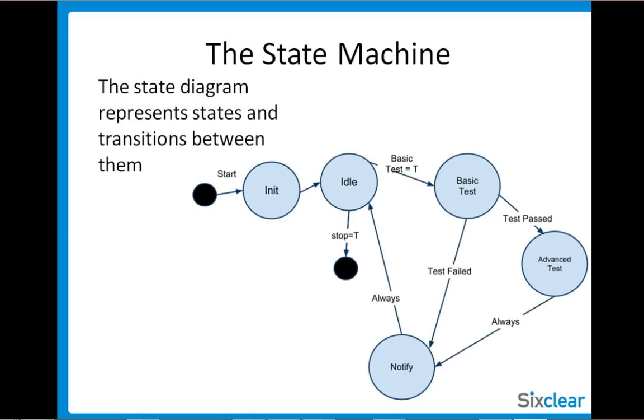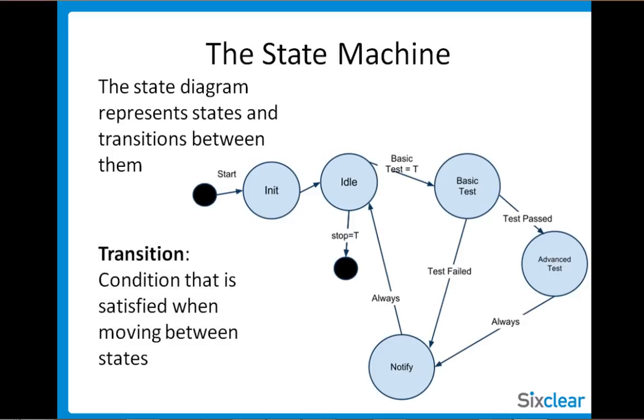We start state programming with a state transition diagram, or state diagram. It represents states and transitions between them. By definition, a transition is a condition that is satisfied when moving between states. Let's take a look here at that lab test application.